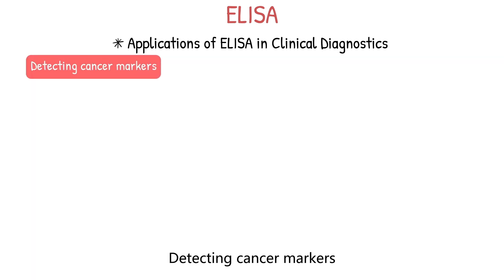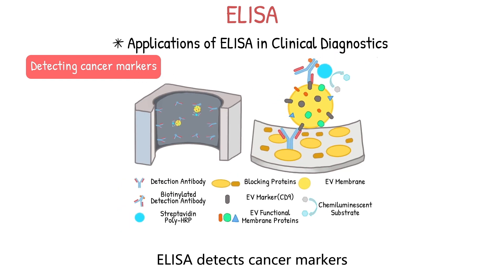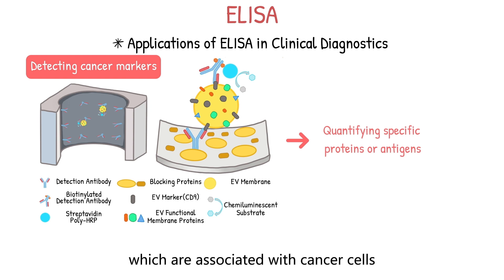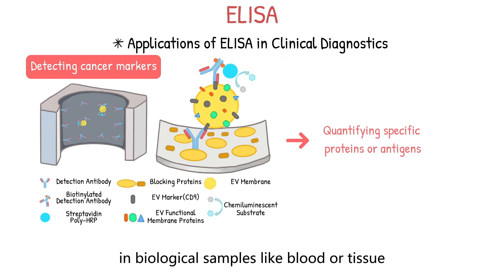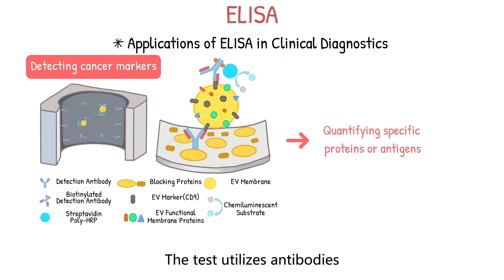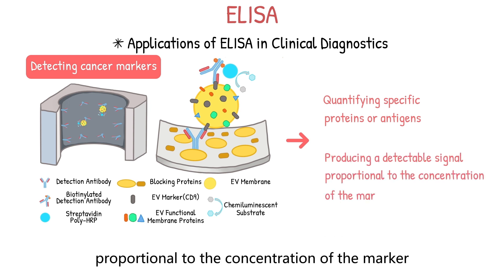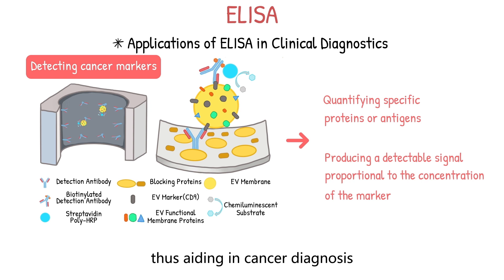A fourth application is detecting cancer markers. ELISA detects cancer markers by quantifying specific proteins or antigens associated with cancer cells in biological samples like blood or tissue. The test utilizes antibodies that selectively bind to these markers, producing a detectable signal proportional to the concentration of the marker, thus aiding in cancer diagnosis, prognosis, and monitoring.